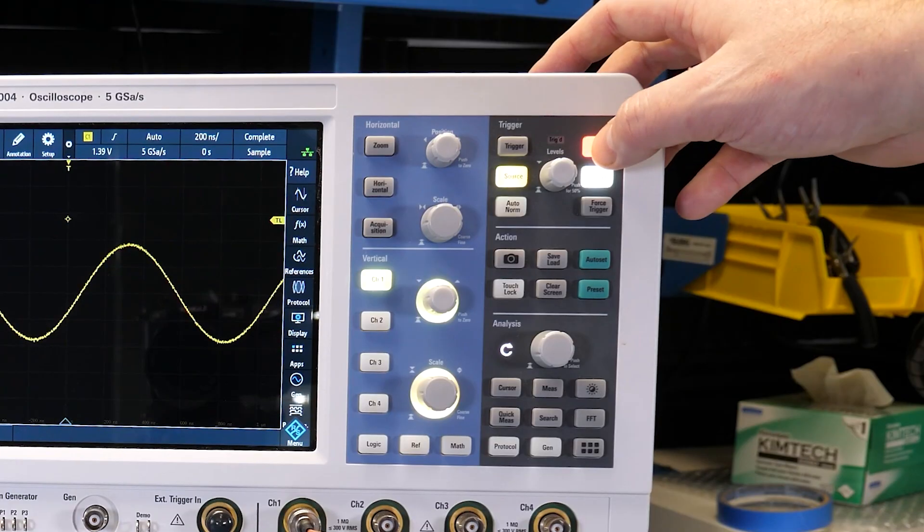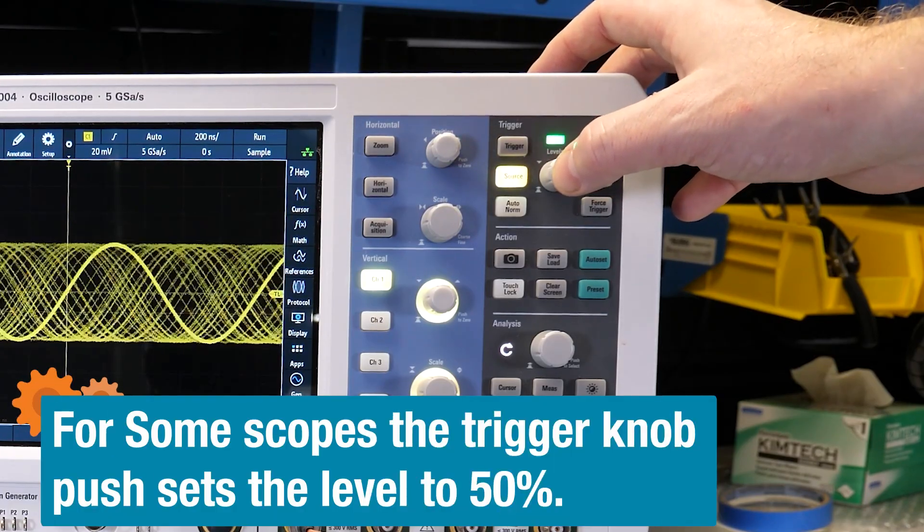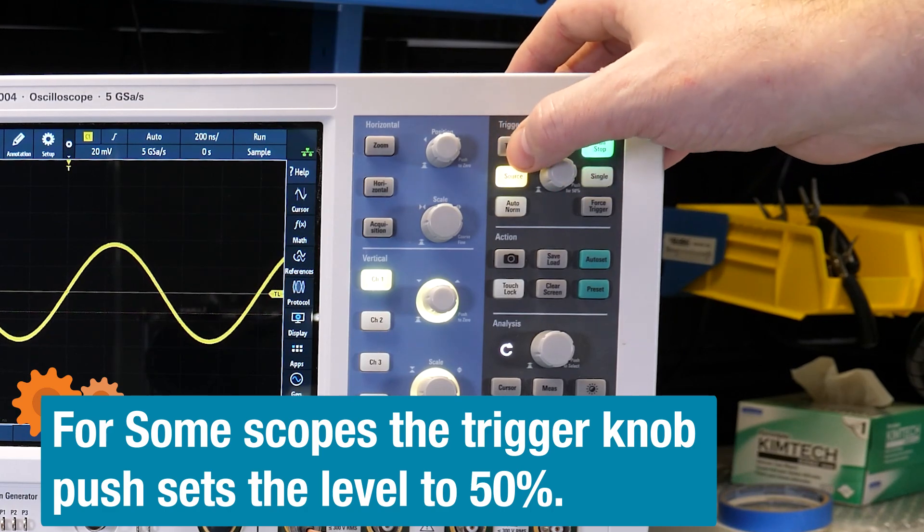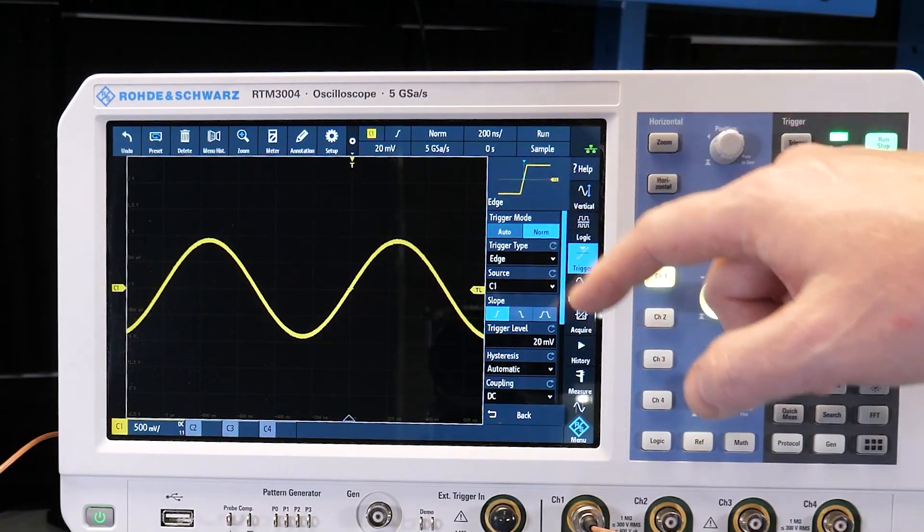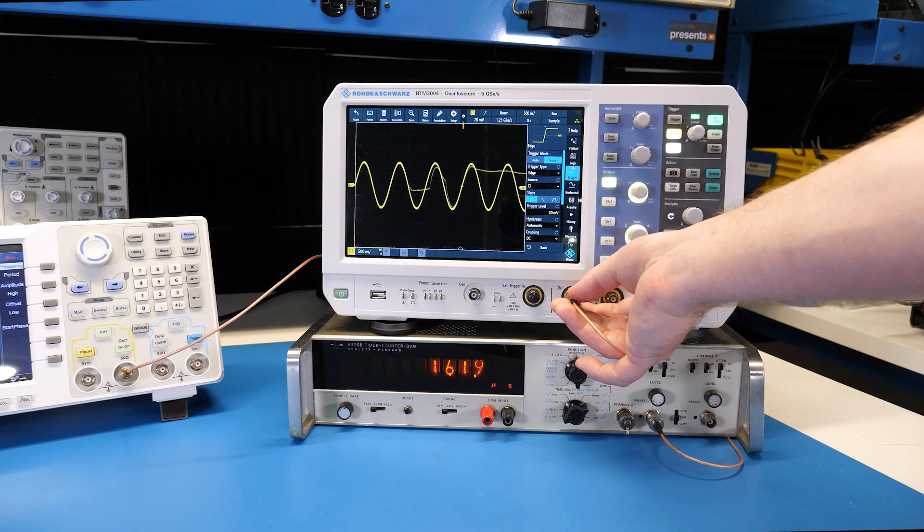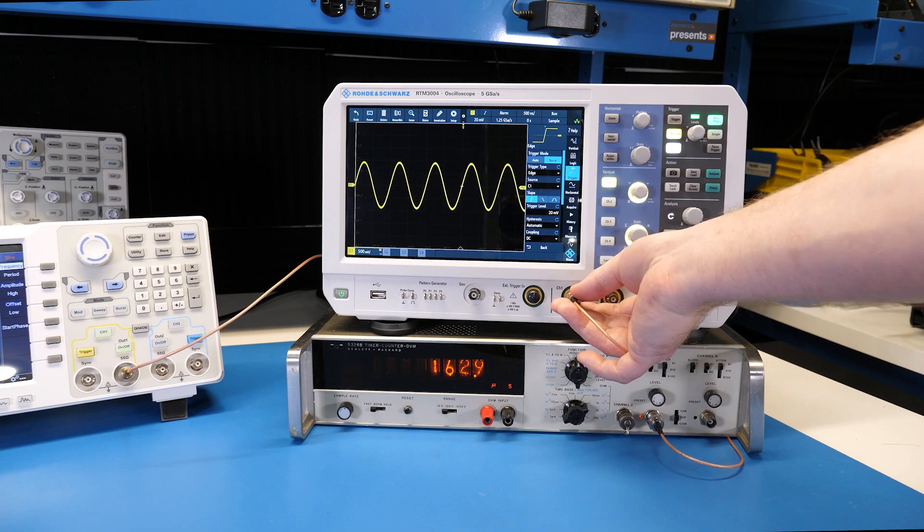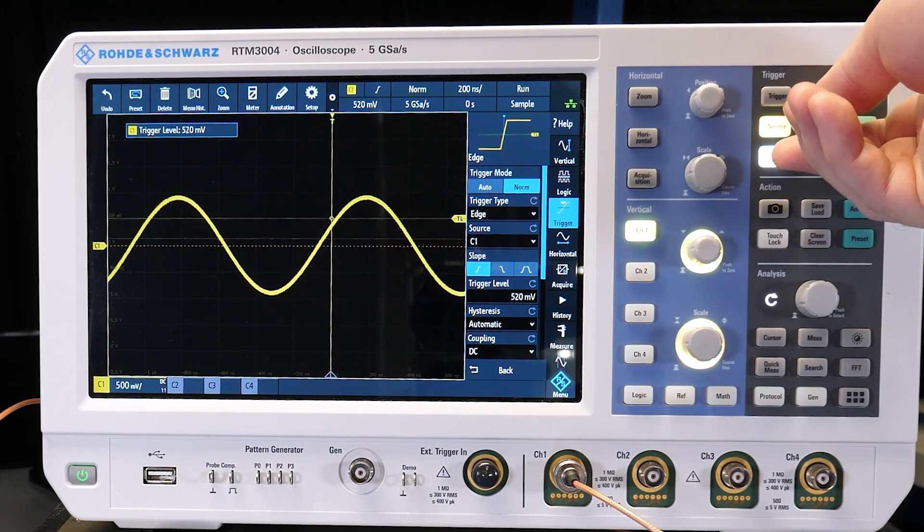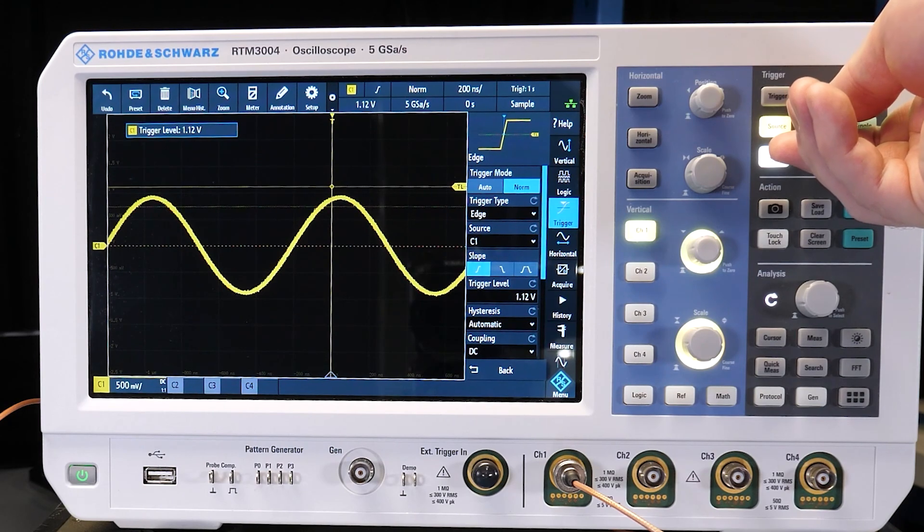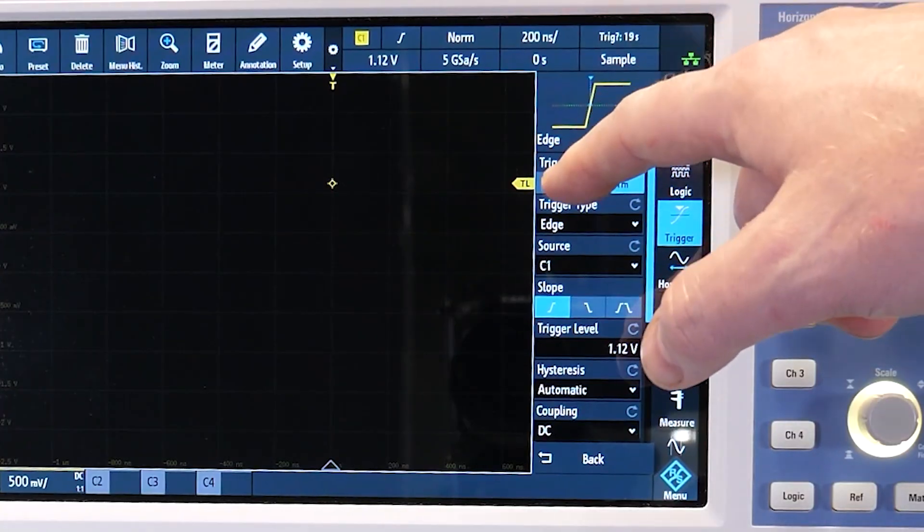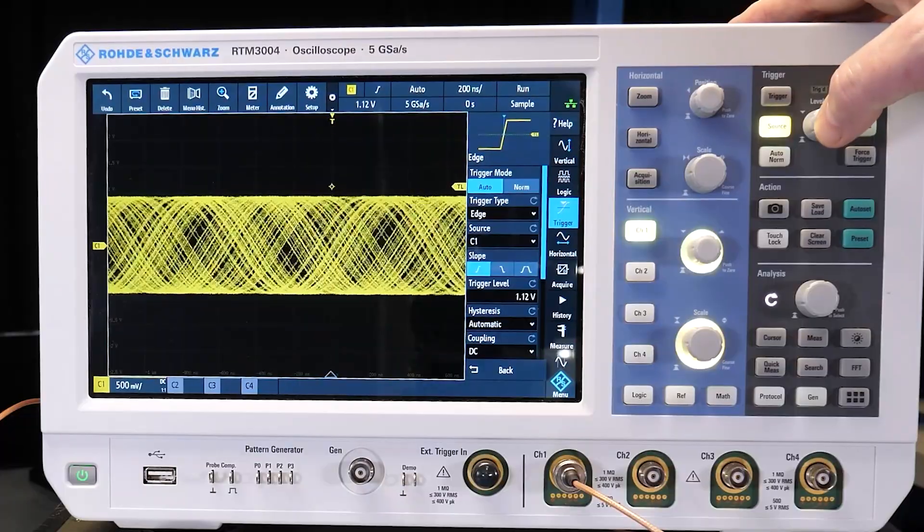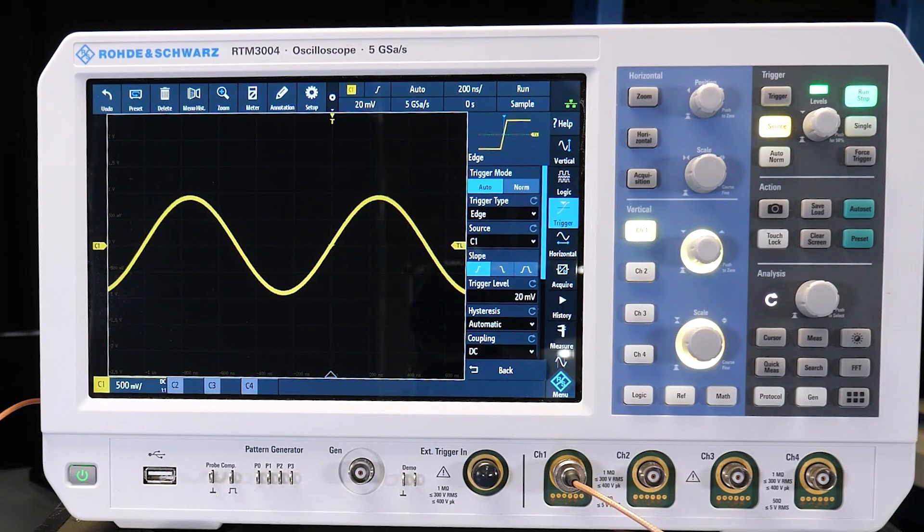Every scope I know of defaults to auto. To see the other two modes, first we need to set the trigger level to zero volts. When switching from auto to normal, well, nothing changes. Womp womp. But as I start to disconnect and reconnect the BNC cable, the scope only displays new data sometimes. To understand when, let's first reconnect the cable. Watch as I move the trigger point up. See, updates only occur when the trigger is valid. Versus auto, which automatically updates the display even if no trigger occurs after a certain amount of time.